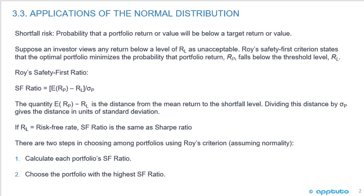The quantity ERP minus RL is the distance from the mean return to the shortfall level. Dividing this distance by the standard deviation of the portfolio gives the distance in units of standard deviation. Note that if RL equals the risk-free rate, then the safety first ratio is the same as the Sharpe ratio.